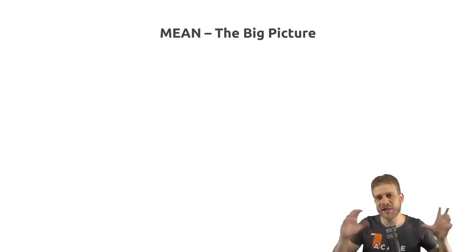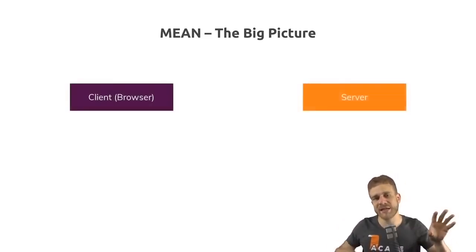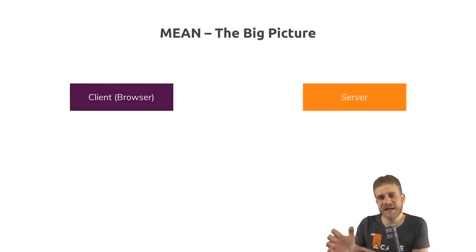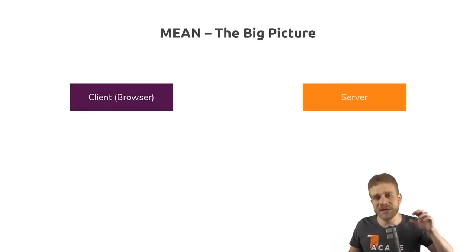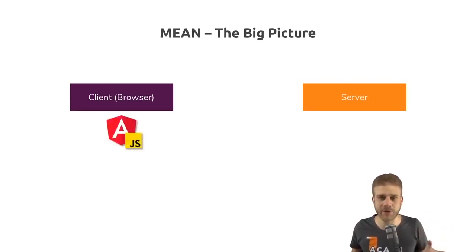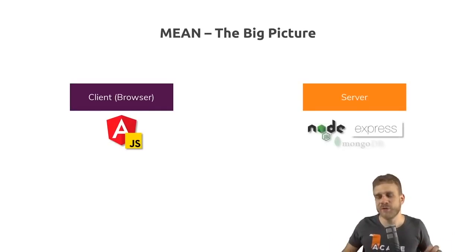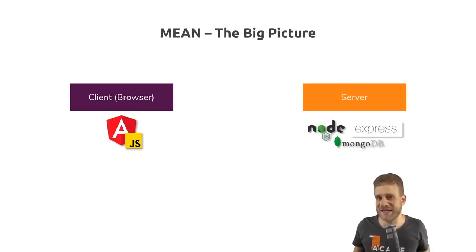Let's have a look at the big picture of how the entire MEAN stack works. We have the client side and the server side. The client side is what the user sees — the web page as it runs in the browser. The server side is somewhere on a server we deploy, where we run our business logic. On the client, we use Angular — a JavaScript framework — to build the user interface. On the server side, we use Node, Express, and MongoDB: Node Express for the logic and MongoDB as a database.